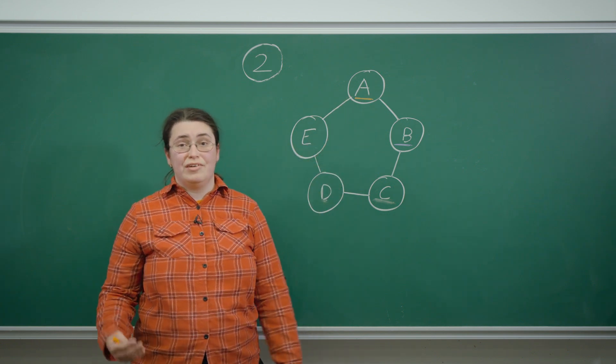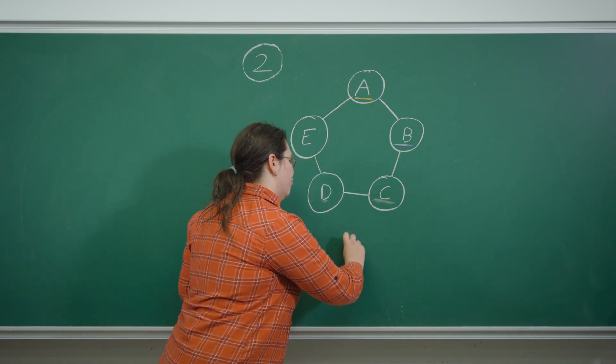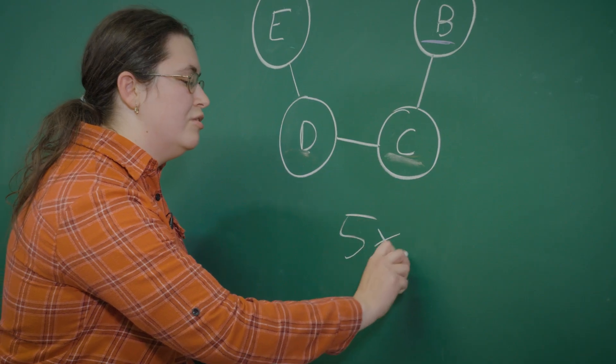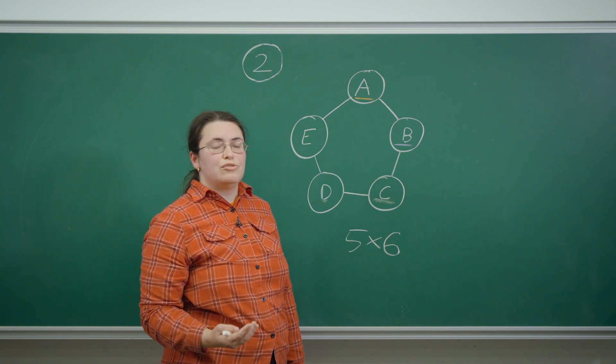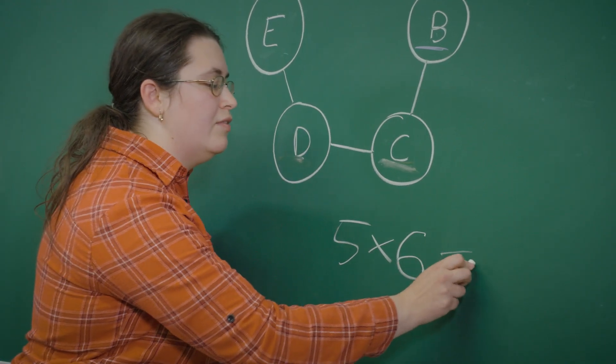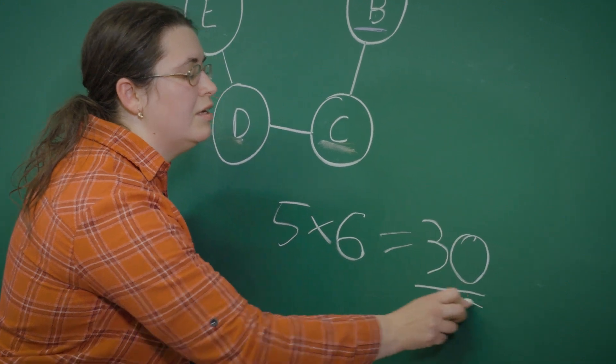With A and B having definite colors, I now need to multiply that five by the original six due to the different choices I could make for the initial two colors. Therefore, the total number of possible colorings is 30.